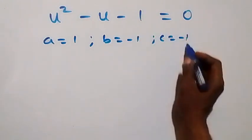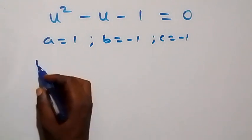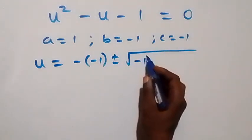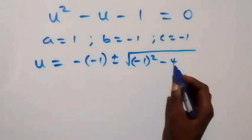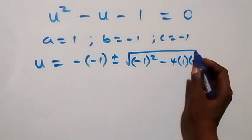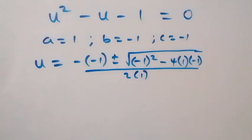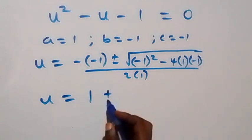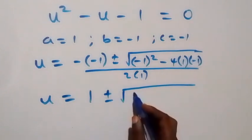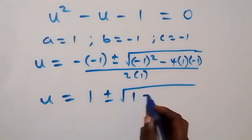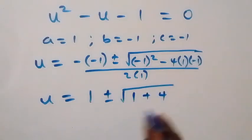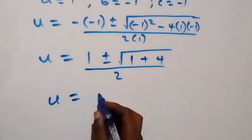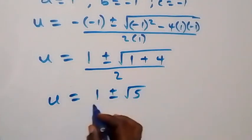Using the quadratic formula, u equals minus b plus or minus square root of (b² minus 4ac) over 2a. Substituting: u equals 1 plus or minus square root of ((-1)² minus 4 times 1 times -1) all over 2 times 1. That gives us 1 plus or minus square root of (1 plus 4) over 2, which is 1 plus or minus root 5 over 2.